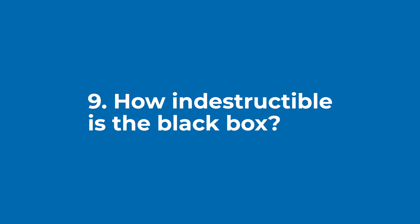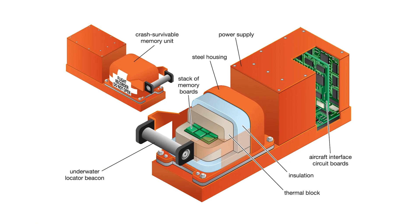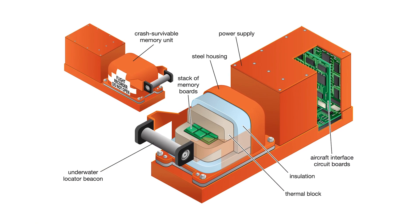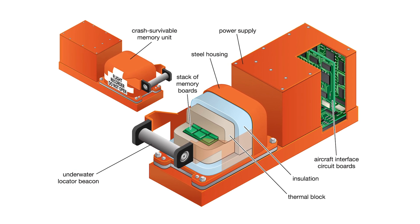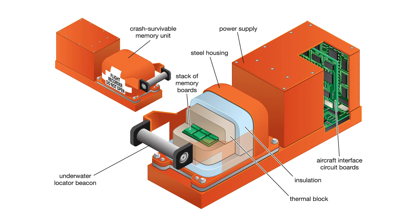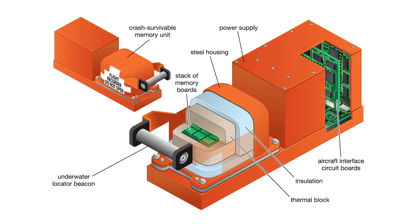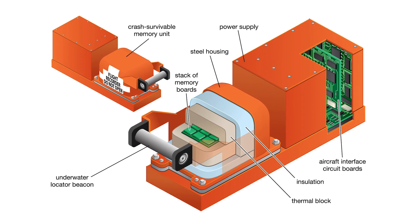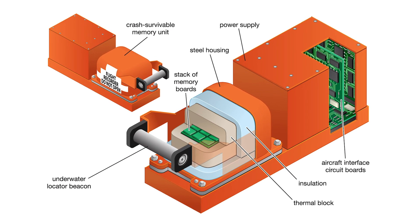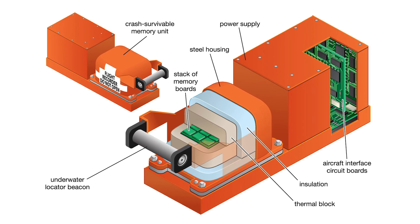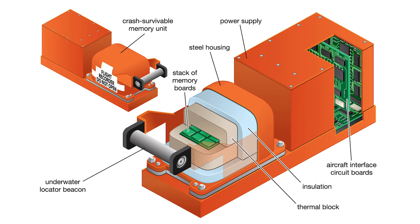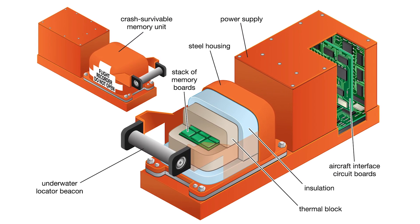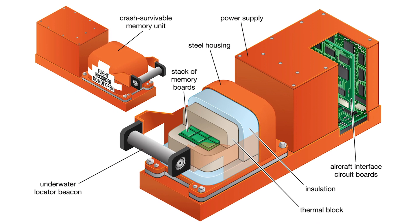Just how indestructible is the black box? A plane's black box recorder stores information on flight control, performance, and audio of the crew's communications that can be retrieved in the event of a crash. These machines can withstand temperatures of over 3,000 degrees Fahrenheit and stand up to impacts 3,400 times the force of gravity, and still be able to emit a signal beacon for up to 37 days.